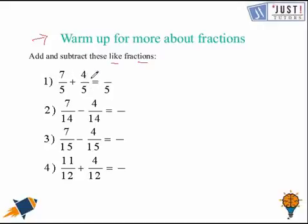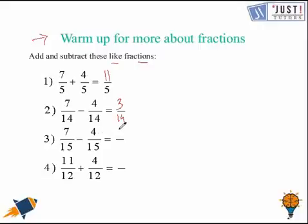We need to add or subtract the numerator based on the operator. In the first question, 7 add 4 is 11 over 5. Next, 7 take away 4 is 3 over 14. Then 7 take away 4 is 3 over 15. Finally, 11 add 4 is 15, and the denominator remains the same.